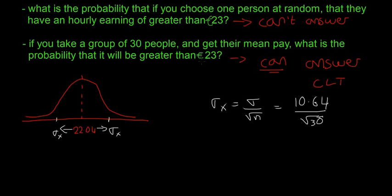In this case, that's 10.64 divided by the square root of 30, because 30 is our sample size. That's the population standard deviation. So sigma_x, if we put that in the calculator, equals 1.943.